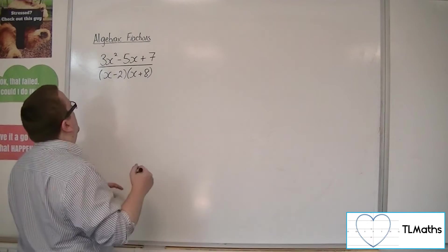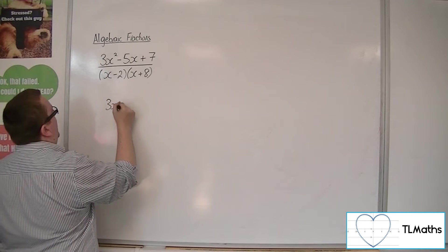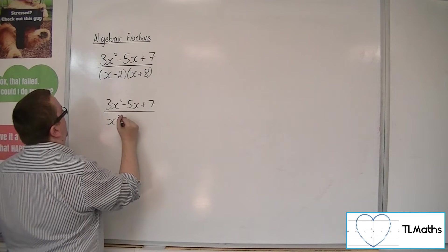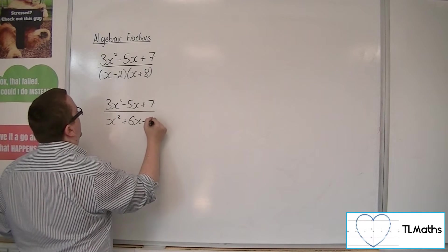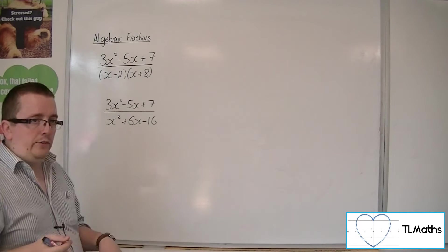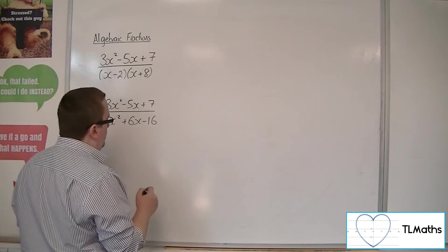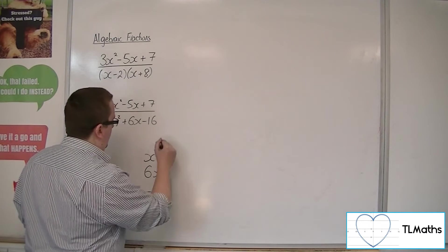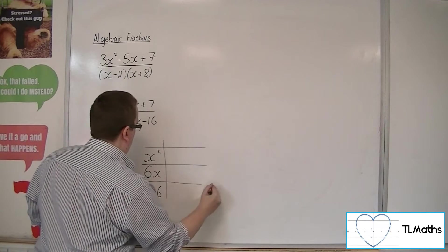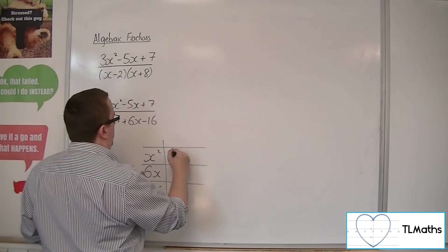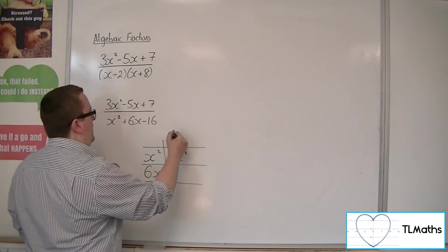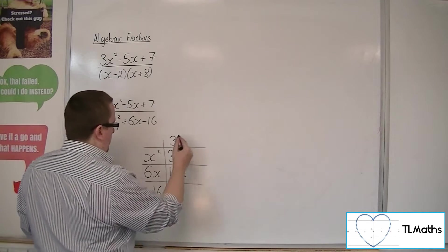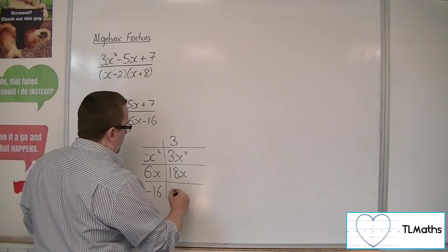What we need to think about is what 3x squared minus 5x plus 7 over x squared plus 6x minus 16 actually is. So I use polynomial division. I've got the x squared, 6x and minus 16 down the left-hand side. I'm going to have this 3x squared, so that would have to be 3. 3 lots of 6x is 18x, 3 lots of minus 16 is minus 48.